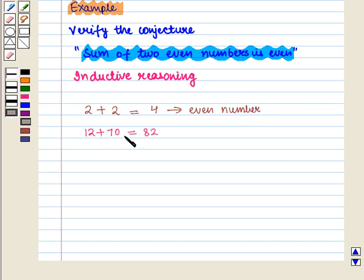12 plus 70 is equal to 82 which is again an even number. Now 220 plus 176 is equal to 396 which is an even number.